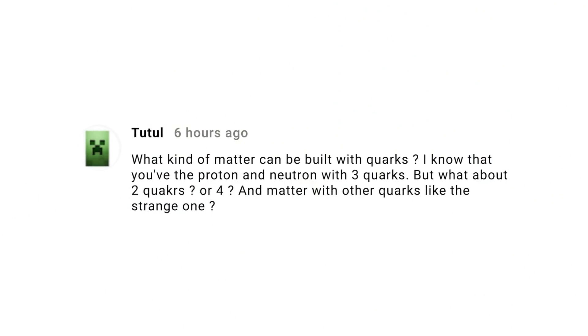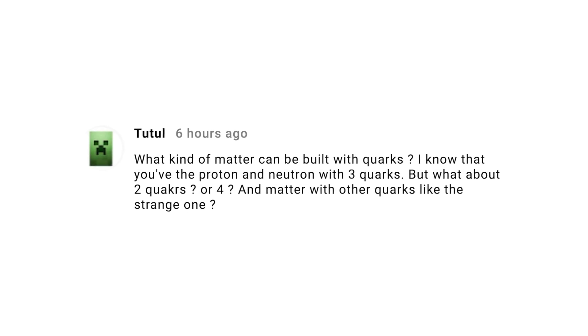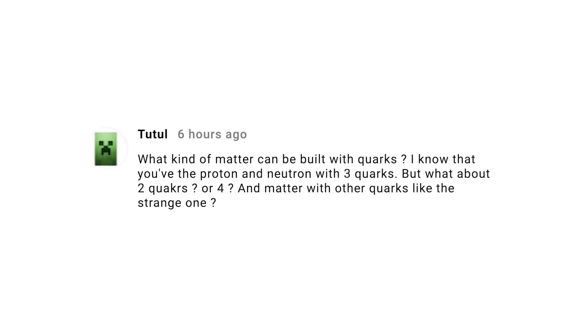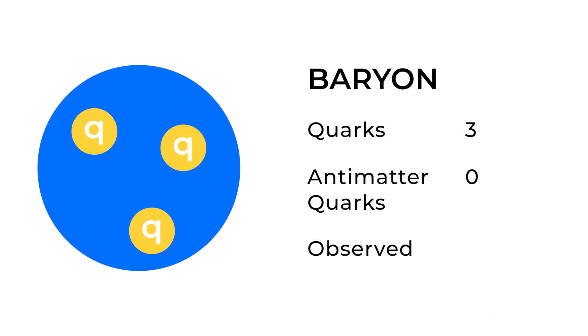Toodle asks, What kind of matter can be built with quarks? They know that the proton, the neutron, is three quarks. But what about two quarks and four quarks? What about other ones? In my previous video, I talked about how quarks can come grouped in threes. And when they come grouped in threes, that's a class of particles called the baryon.